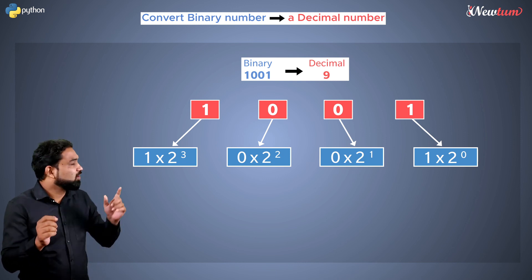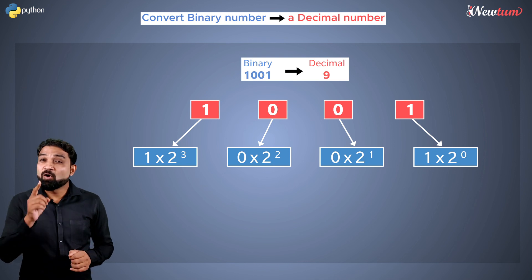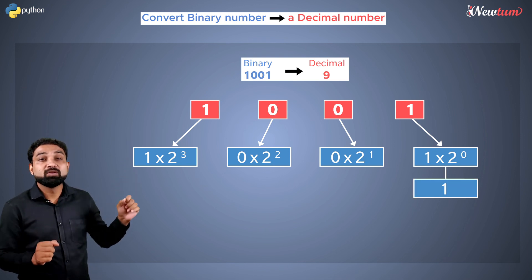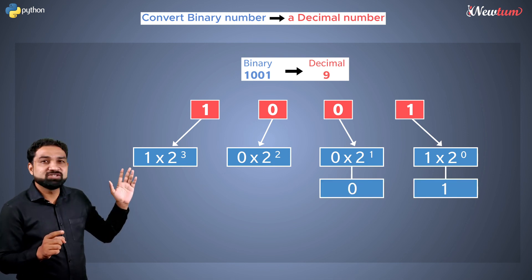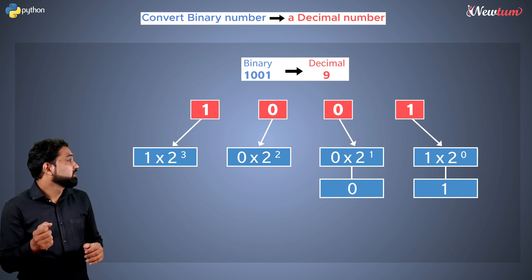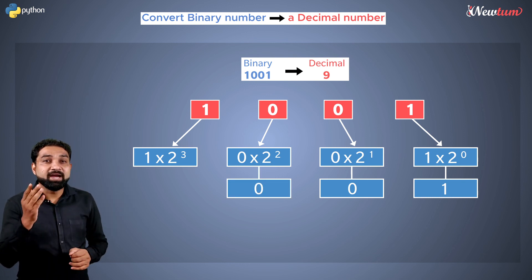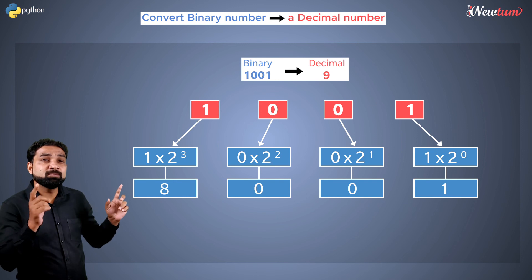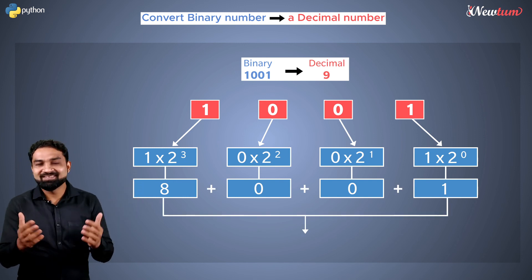Then we will sum all of them. The output of the first expression is 1. For the second expression, it's 0. For the third, it's again 0, and then 8. If you sum all of them, it's nothing but 9.